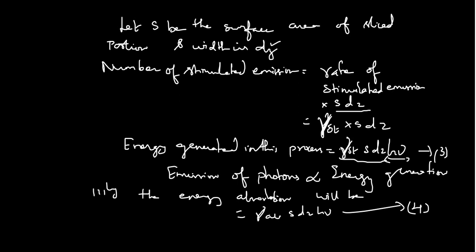The energy generated in the stimulated emission process is R_st · S · dz · hν, where hν is the energy of the photon — this is equation 3. Similarly, the energy absorption is the rate of absorption · S · dz · hν, which gives equation 4. The emission of photons is directly proportional to the energy generated.